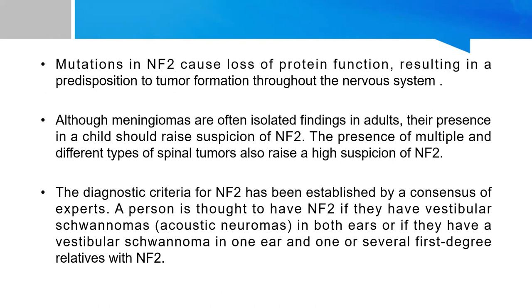Although meningiomas are an isolated finding in adults, their presence in a child should raise the suspicion of NF2. The presence of multiple and different types of spinal tumors should also raise high suspicion of NF2. The diagnostic criteria for NF2 has been established by a consensus of experts. A person is thought to have NF2 if they have vestibular schwannomas in both ears — that is, bilateral CP angle schwannomas — or if they have a vestibular schwannoma on one side and one or several first-degree relatives with NF2.